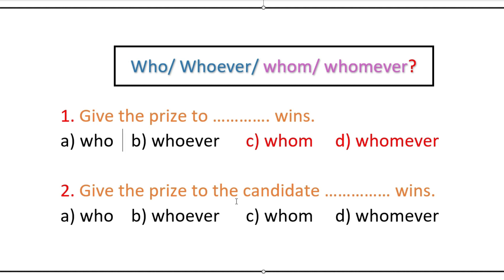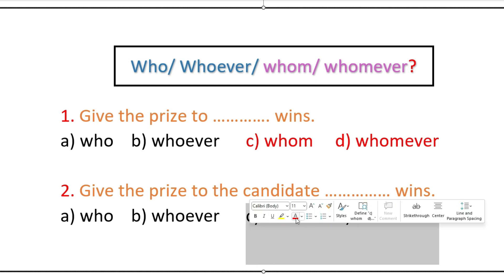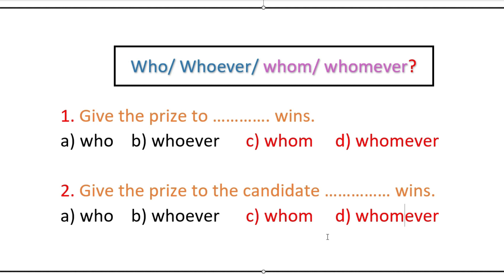The next question is: 'Give the price to the candidate ___ wins.' Among the four options — who, whoever, whom, whomever — we must not use whom or whomever because they are in objective form. Since the verb 'wins' needs a subject, we choose between who and whoever.